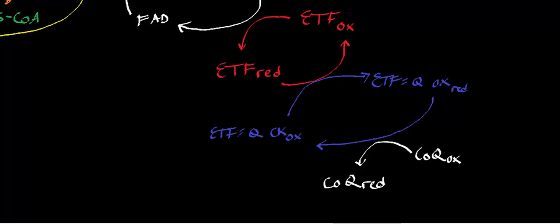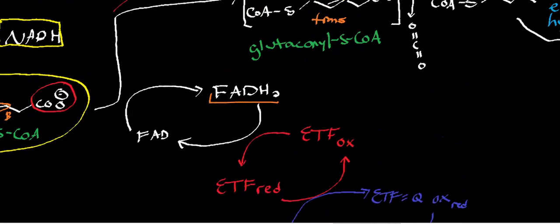Our yield from this part of the reaction is one reduced ubiquinol (coenzyme Q reduced). That reduced coenzyme Q feeds into complex III of the mitochondrial respiratory chain — cytochrome C ubiquinone oxidoreductase — which catalyzes the pumping of four protons into the inner membrane space, powering ATP synthesis. Keep in mind this process is occurring in the mitochondria of liver cells, the hepatocytes.